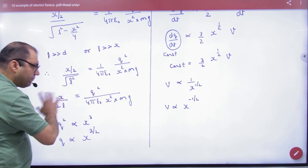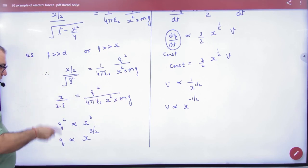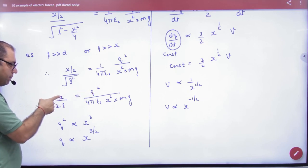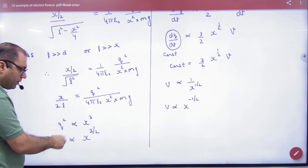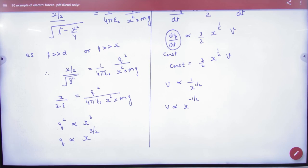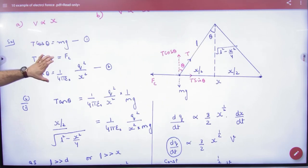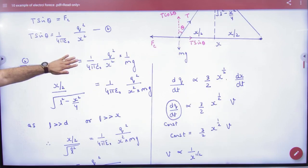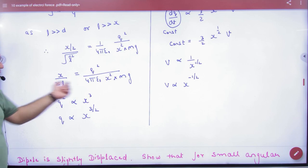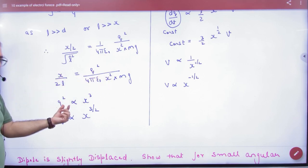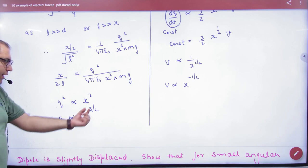The whole constant is constant. Q changes with time, X changes with time. So Q² proportional to x² times x, which is x³. Therefore Q proportional to x raised to power 3 by 2. So you can see that at any instant, charge and distance are proportional with this relationship.